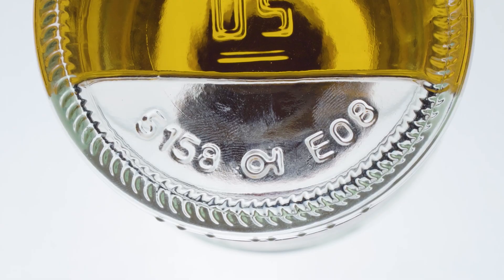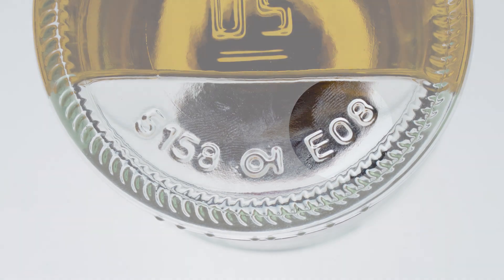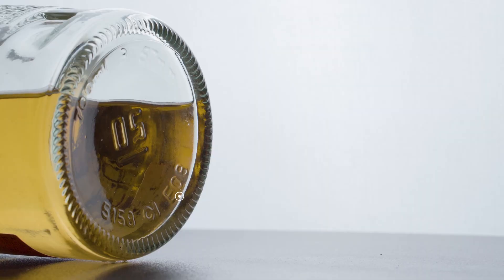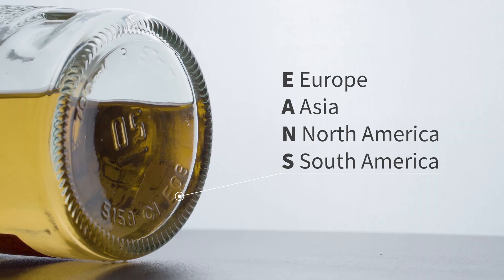Considering it's an OI bottle, the next thing you want to pay attention to is this letter and numbers, and these give you a rough understanding of the region where the bottle was actually produced. In my case: E stands for Europe, A stands for Asia, N stands for North America, and S stands for South America.